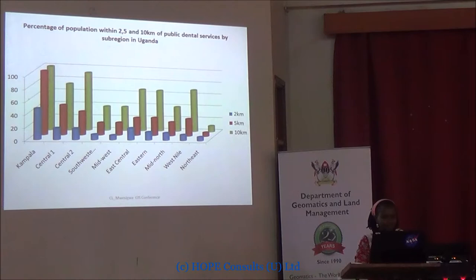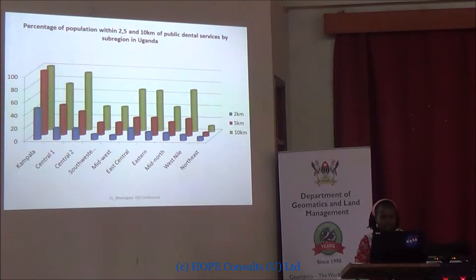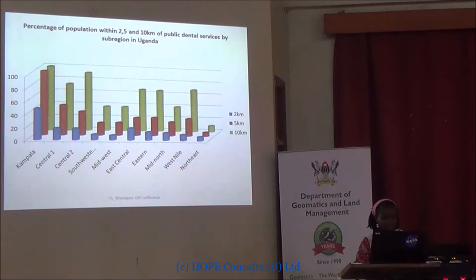Data extracted from the maps showed Kampala was fully saturated in services at 5 and 10km. The North East, on the extreme end, showed almost no difference between 2 and 5km — remembering there are only 2 clinics supplying 7 districts. As expected, at greater buffer distances there should be an increase in access, but for the North East this is not the case — access remains almost level.